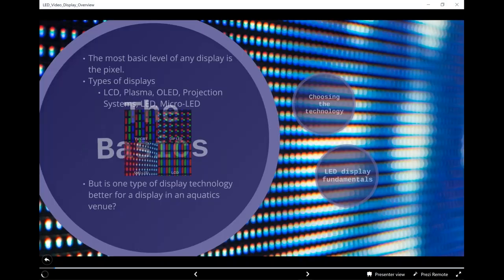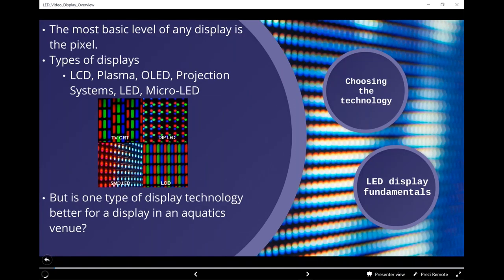Any display — whether it's on your phone or the old-term jumbotron at a ballpark or football field — the basis of every one of those displays at its most basic level is the pixel. The pixel is just the individual element that displays red, green, or blue — or shades of those — to make up an image or text as a whole on a large-scale display. The kinds of displays we encounter today include LCD flat panel monitors, plasma displays, OLED, and projection systems.